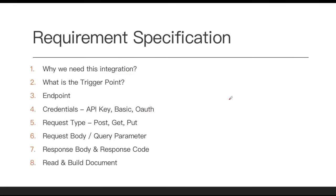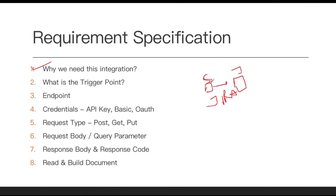Before we integrate one system to another, we need to know a few things. Integration could be real-time or periodic. You should know why you are doing the integration. For example, using Jira integration we can send stories, epics, and defects from ServiceNow to a Jira instance. Similarly, for any application you integrate, you should know the purpose first.